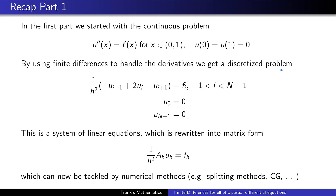In part one, we started with the continuous problem: the negative second derivative of a function u equals a function f inside a given domain, and on the boundary the function is zero. These are called the Dirichlet boundary conditions. We used finite differences to tackle this problem and ended up with a discretized system of linear equations written in matrix form.